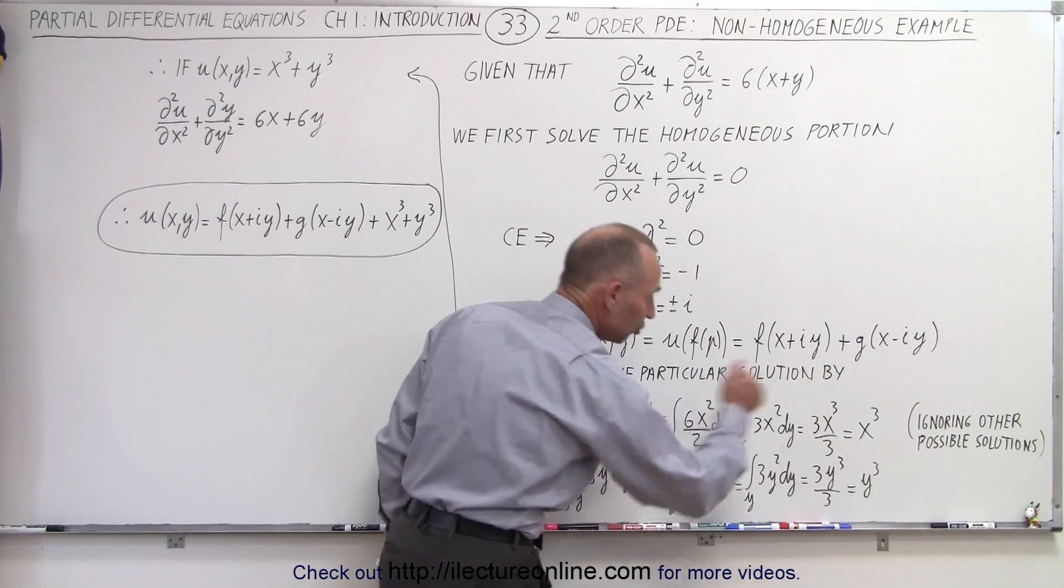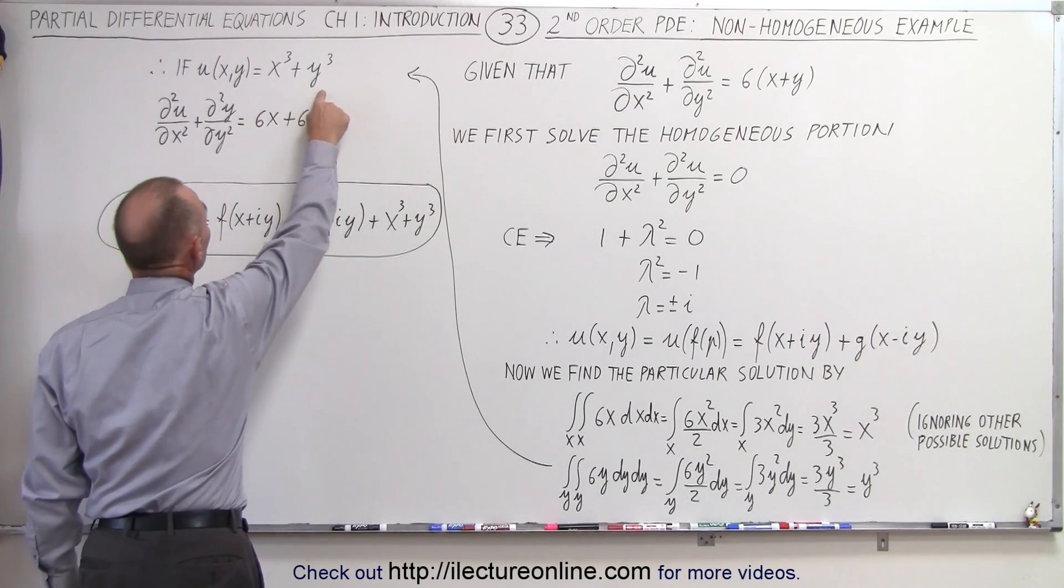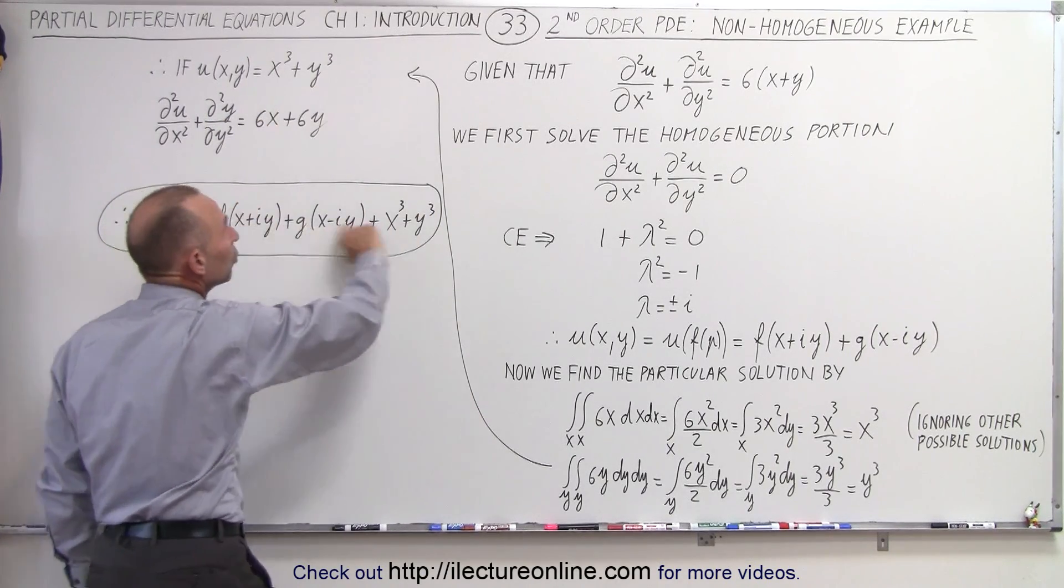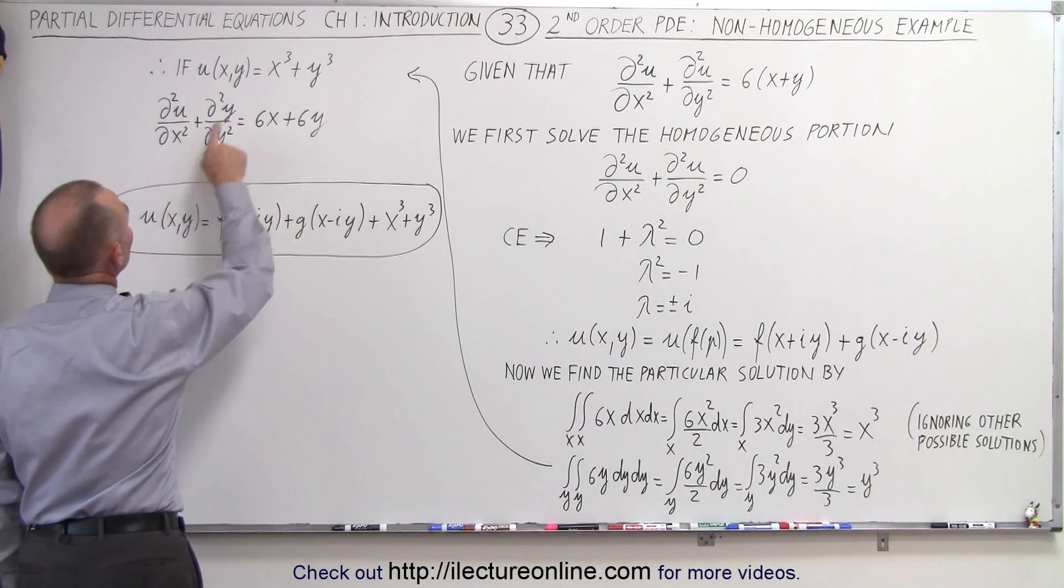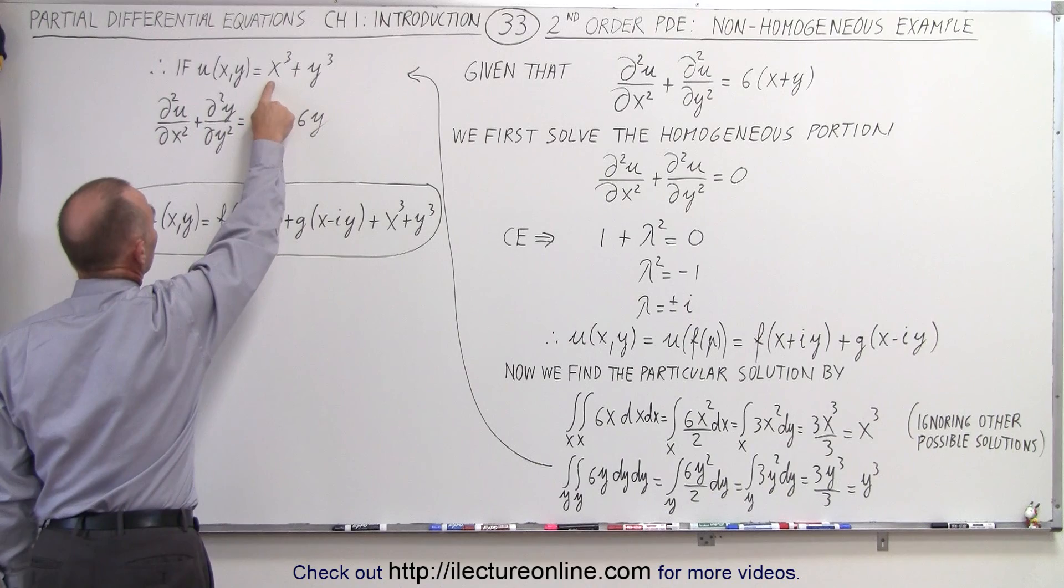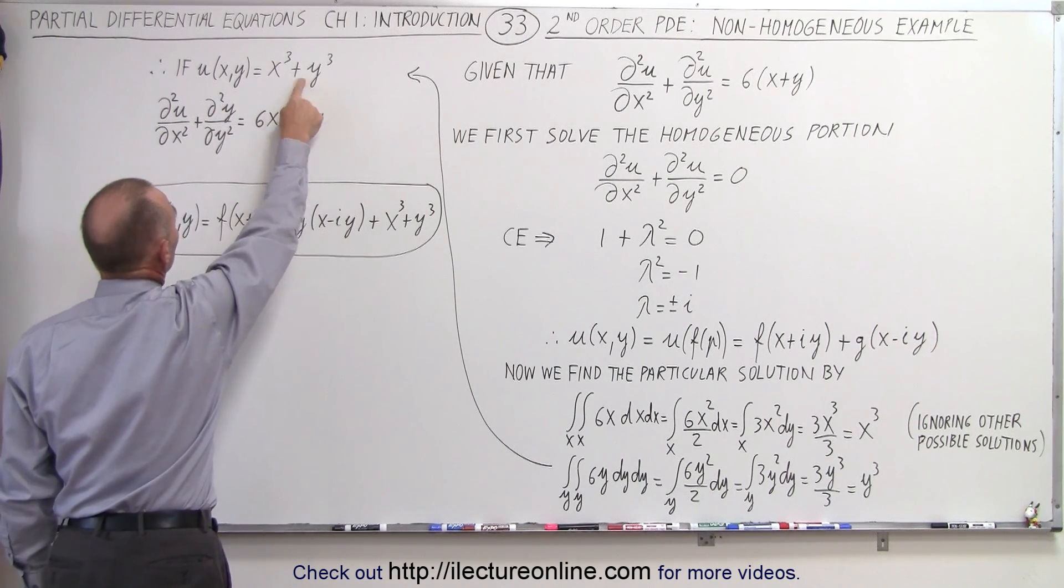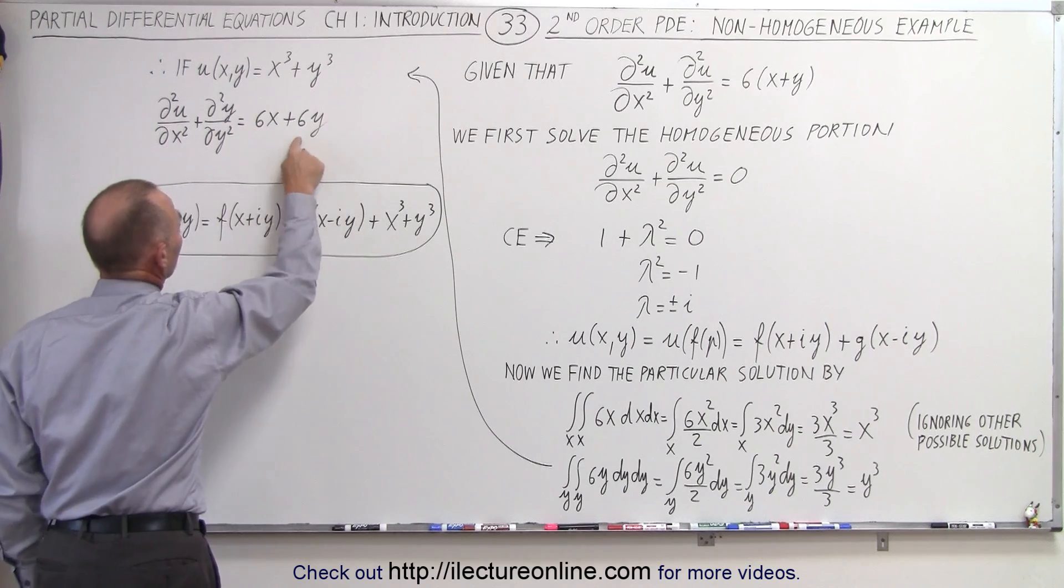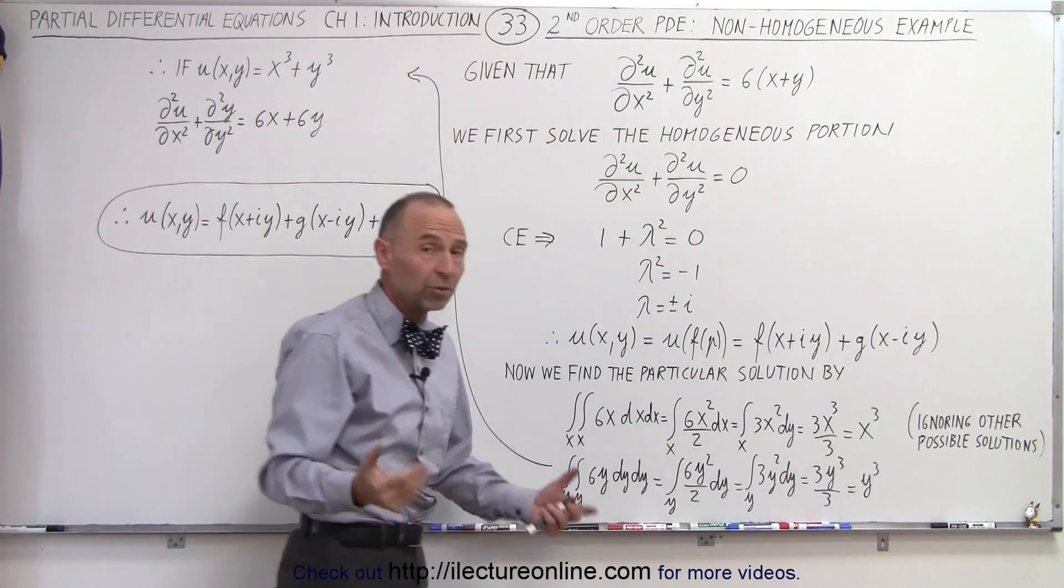So now we can see that relationship, which means that this is a possible solution to the differential equation. So what we're saying here is, if we take the second partial derivative of this with respect to x, and the second partial derivative with respect to y, we get back 6x plus 6y, what we started with. So we've shown that this is one possible solution.